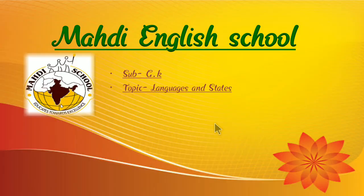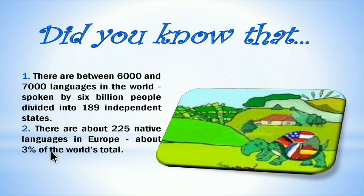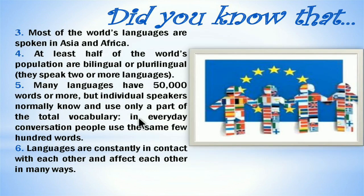Now we are going to learn in detail. Did you know that there are between 6,000 and 7,000 languages in the world spoken by 6 billion people divided into 189 independent states? There are about 225 native languages in Europe, about 3% of the world's total. Most of the world's languages are spoken in Asia and Africa.